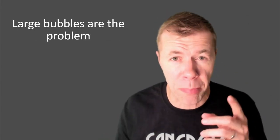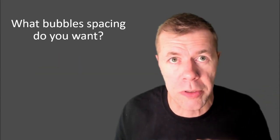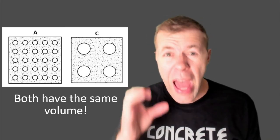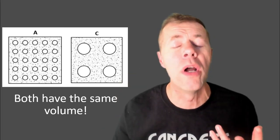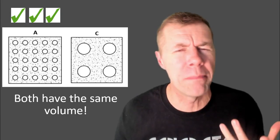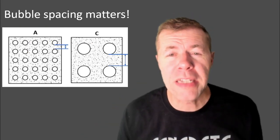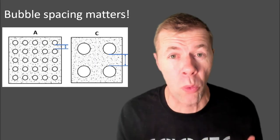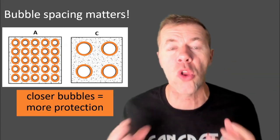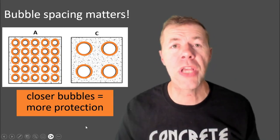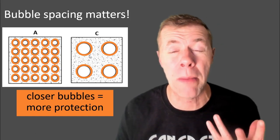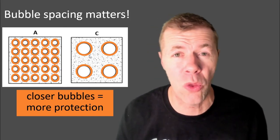Large bubbles, ladies and gentlemen, they're the problem. Watch out for the large bubbles. I'm showing two air void systems, one on the left and one on the right. Both of them have the same volume of air. If you're a concrete person, you know you would much rather have the one on the left. Bubble spacing matters. See how on the left the bubbles are closer together? That is a big deal, because every single bubble protects a certain region around it — so the closer the bubbles, the more protection. If I'm a water molecule and I freeze, there's only a certain distance I can travel before I cause damage, and we get a lot more protection out of the one on the left.